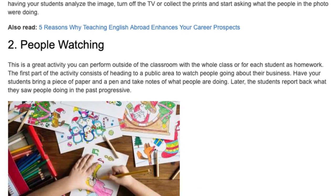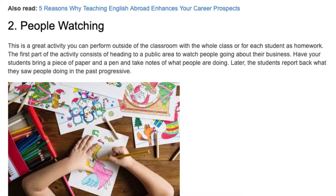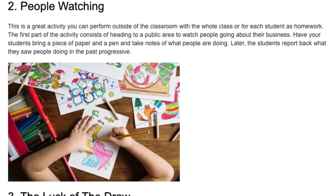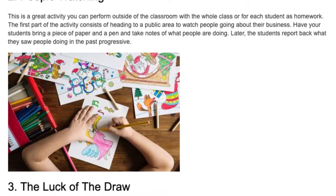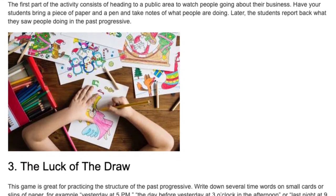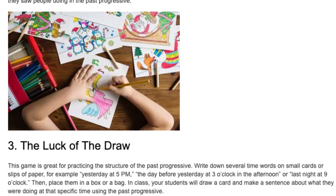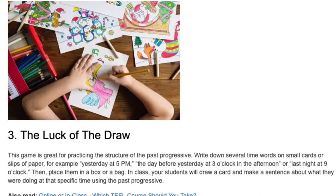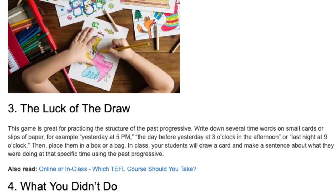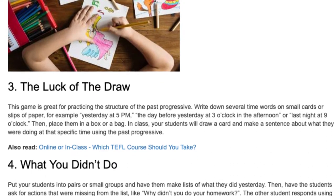Activity 3: The Luck of the Draw. This game is great for practicing the structure of the past progressive. Write down several time words on small cards or slips of paper, for example yesterday at 5pm, the day before yesterday at 3 o'clock in the afternoon, or last night at 9 o'clock. Then place them in a box or a bag. In class, your students will draw a card and make a sentence about what they were doing at that specific time using the past progressive.